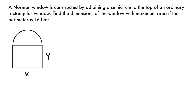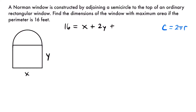The perimeter is the measurement around an object. To represent the perimeter of this Norman window, we need the measurement around the outside of the rectangle, excluding the top edge, plus the measurement around the semicircle. The perimeter is 16, equal to one length of x plus two lengths of y, so 2y, and then we add the semicircle's half-circumference. For a full circle the circumference is 2π times the radius, so for the semicircle we multiply by one half, giving π times r.